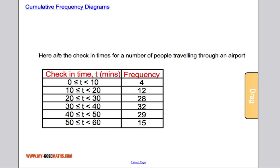Let's start with an example. We've got the check-in times for a number of people travelling through an airport. From the table we can see that 4 people were between 0 and 10 minutes, 12 people between 10 and 20 minutes, 28 people between 20 and 30 minutes, and so on.